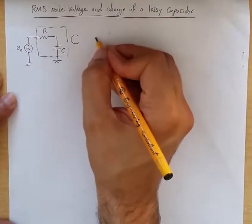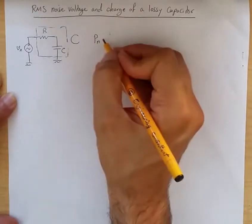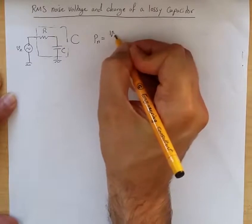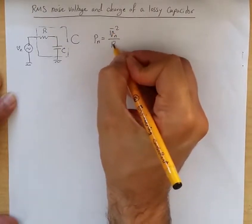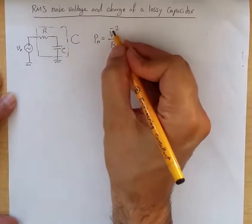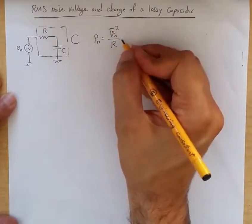We know the power of the thermal noise would be equal to V squared over R, where V bar is the RMS value of the noise voltage.